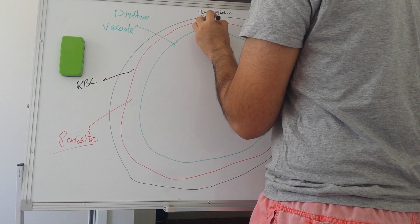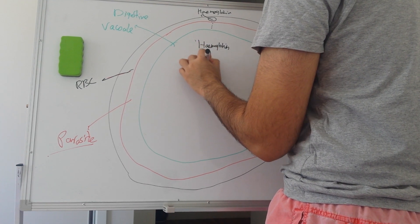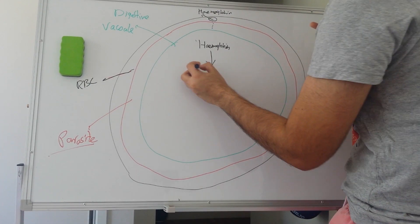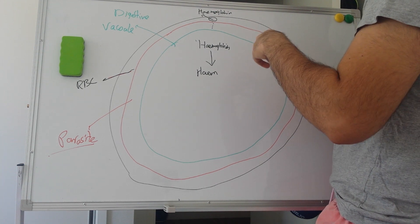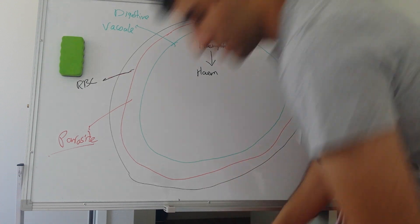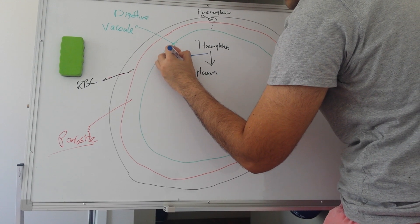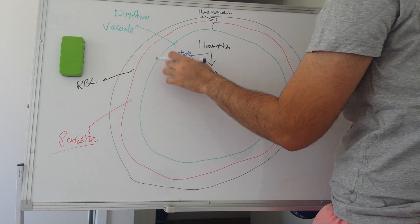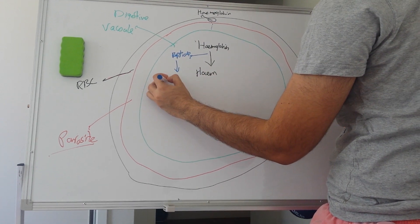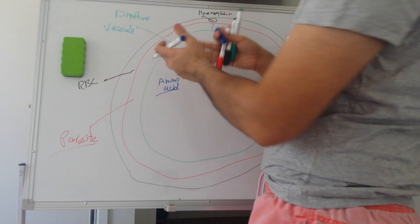The hemoglobin goes inside the digestive vacuole, where it gets converted to heme. The reason the parasite does this is that it creates a useful byproduct: peptides, which are proteins. The parasite breaks those peptides down into amino acids, and uses those amino acids to grow and survive.